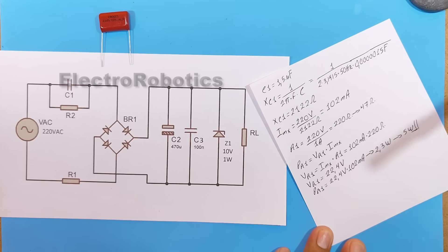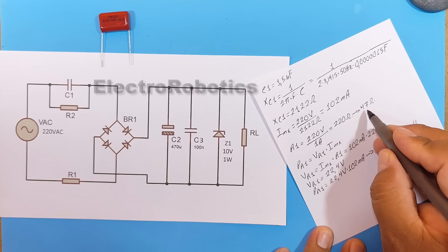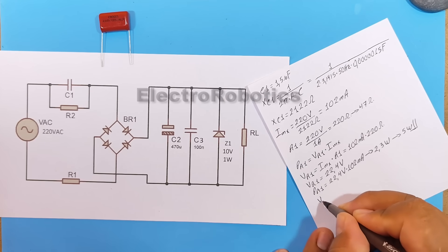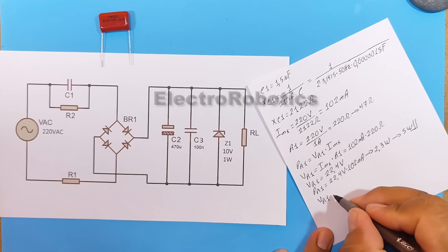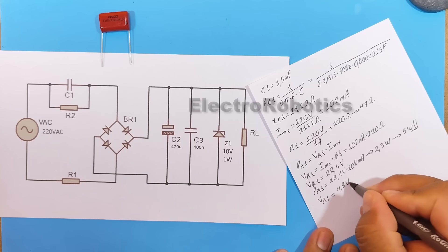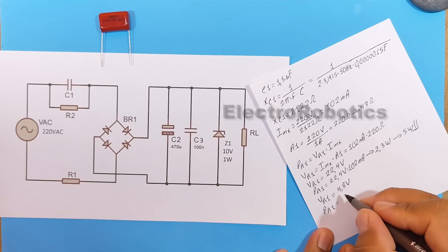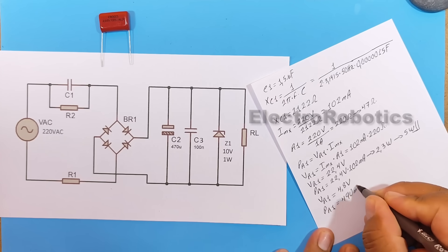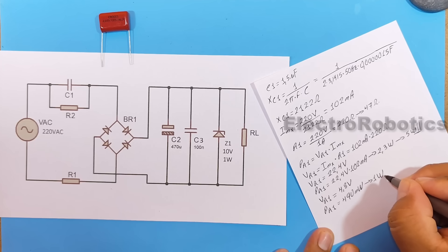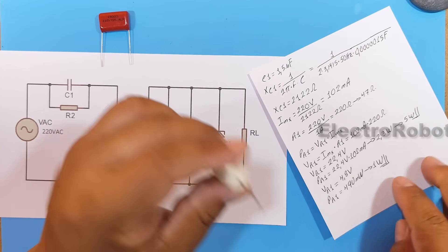One of this size. But what happens if I use a 47 ohm resistor? Well, doing the same calculations, we see that the voltage across R1 would be 4.8 volts, and the power of R1 would be 490 milliwatts, meaning I would need to use a 1 watt resistor.